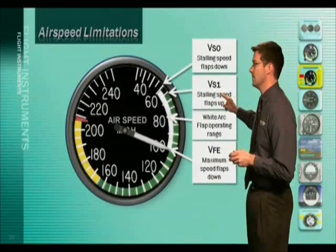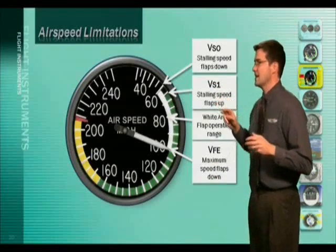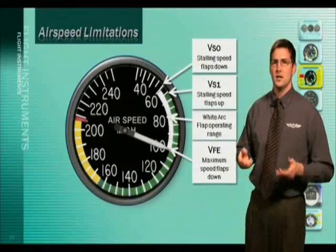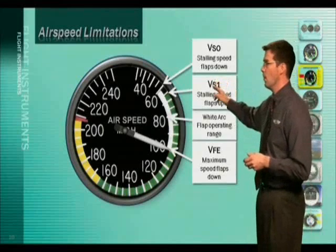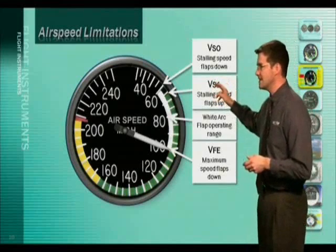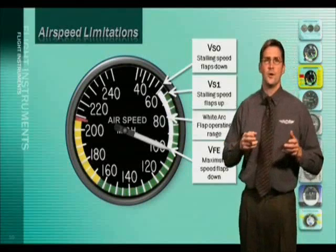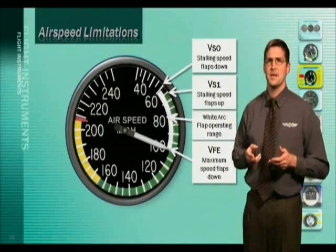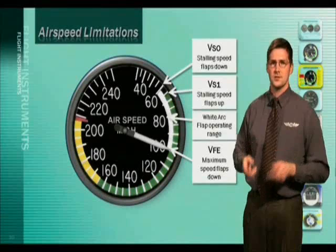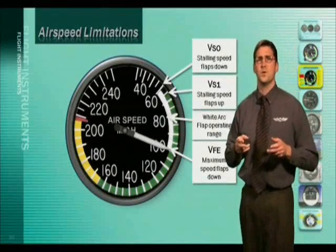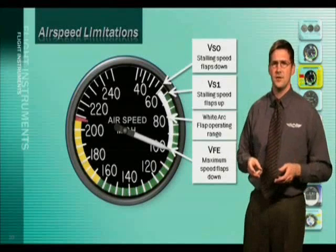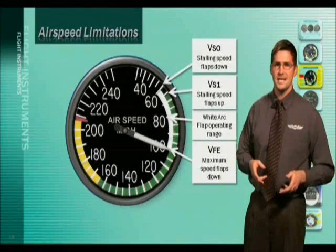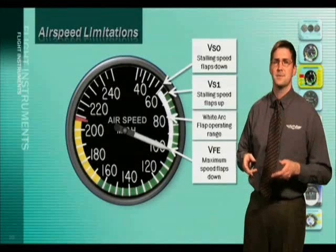Here is VS1. The V is for velocity, S is for stall, but this is configuration 1, meaning with the flaps up or in a clean configuration. VS1 is the stalling speed in a clean configuration, and VSO is the stalling speed in the landing configuration with the flaps and gear down.